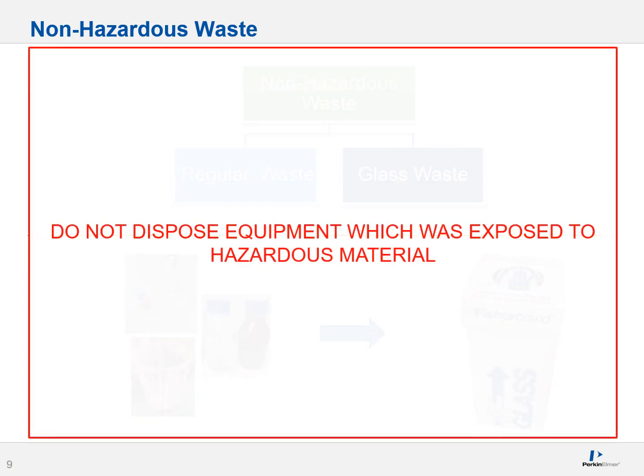Do not dispose of equipment that was exposed to hazardous material in the regular trash stream. For example, if you have a brand new beaker which gets cracked and it never saw any chemicals or any analysis, it's basically a broken piece of glass — dispose of it in the sharps or glass waste.